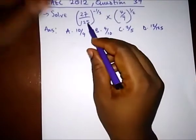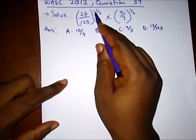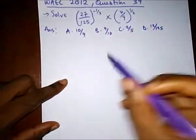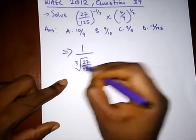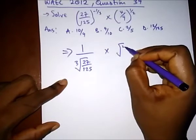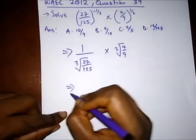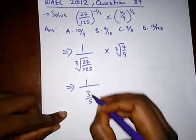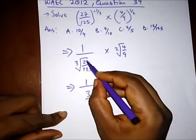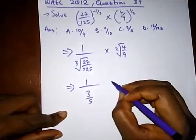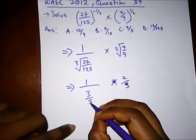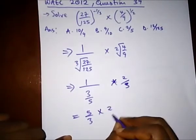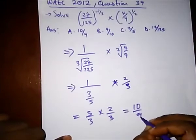Our final question is: solve (27 over 125) raised to the power of 1 over 3, multiplied by (4 over 9) raised to the power of 1 over 2. Simplifying, 27 over 125 to the power 1/3 gives 3 over 5, since 5×5×5 = 125 and 3×3×3 = 27. The square root of 4 over 9 gives 2 over 3. So we have 3 over 5 multiplied by 2 over 3; inverting and multiplying gives 5 over 3 multiplied by 2 over 3, giving 10 over 9.